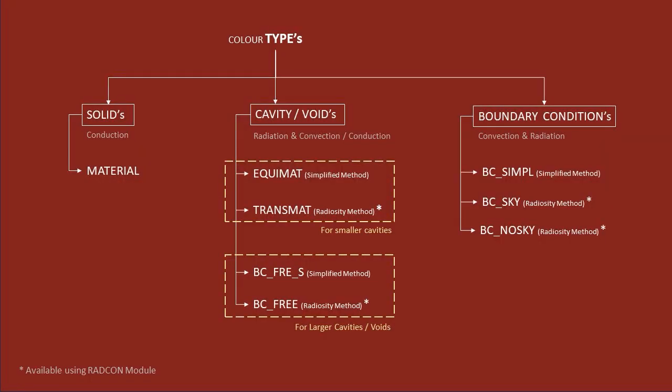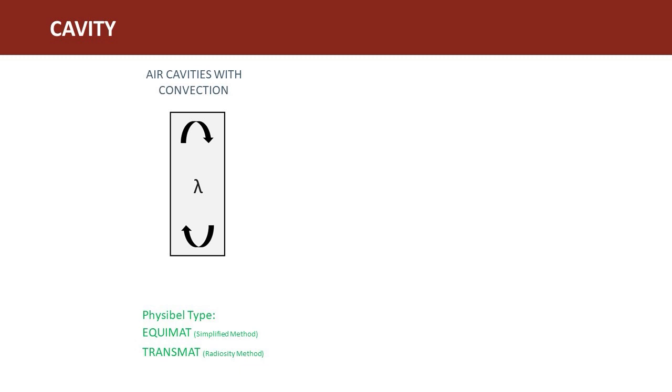The next type for cavities and voids are EQUIMAT, TRANSMAT, BC_FREE_S, and BC_FREE. For the first two types, EQUIMAT and TRANSMAT, convection is treated as a conductive medium. An equivalent thermal conductivity is calculated as per EN ISO standards.